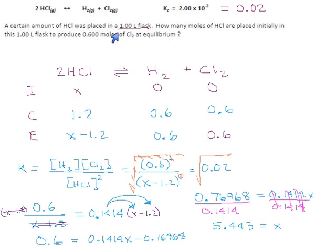Now, significant digits: everything they gave us had three significant digits, including K, so 5.443 is a tad too long. We should trim it down to 5.44.